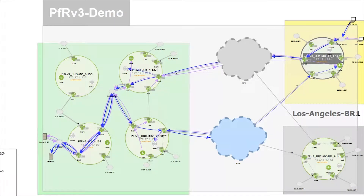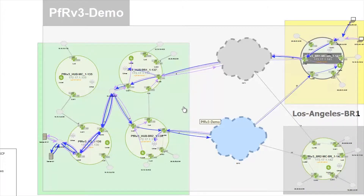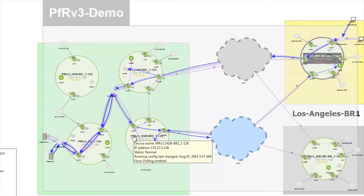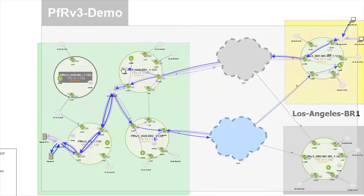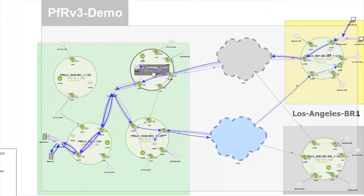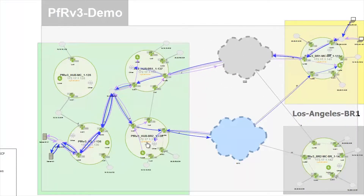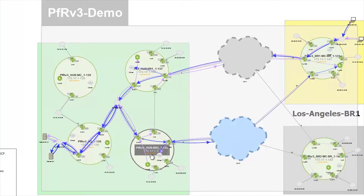This video will cover LiveAction's PFR version 3 capabilities. Here's LiveAction's topology view — it's very familiar to many. In this case for PFR version 3 it's broken up into multiple sites. On the left-hand side, you'll notice Palo Alto is the hub site for this PFR domain, made up of multiple devices. Palo Alto has separate master controllers which are separate from its border routers — one border router going off to ISP 1, and a second border router also controlled at the Palo Alto hub site going off to ISP 2.